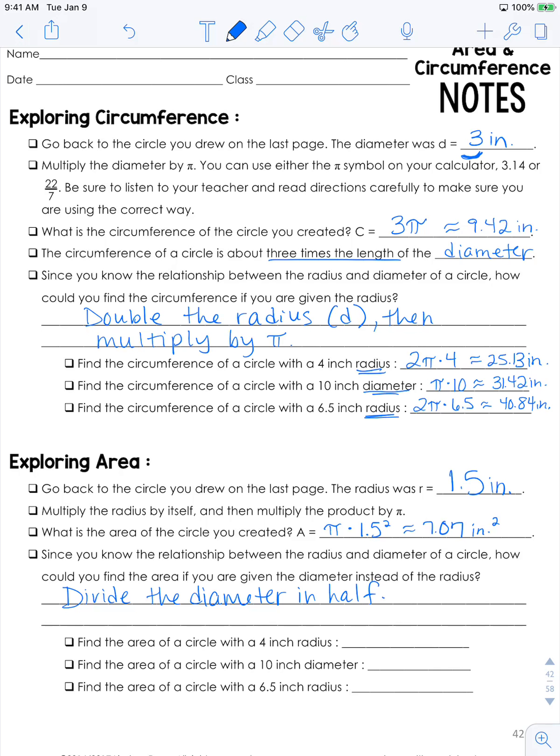So pause here if you want to work this out yourself and then check. The area of a circle with a 4 inch radius is going to be π times 4 squared, which is about 50.27 inches squared.